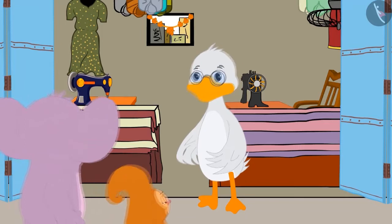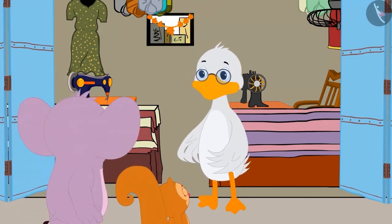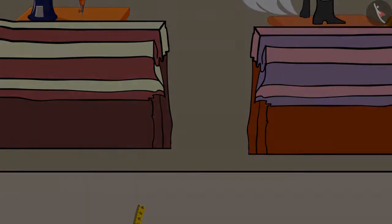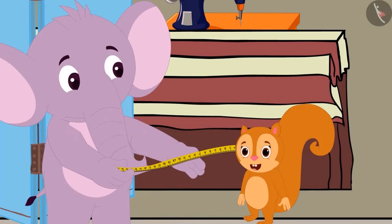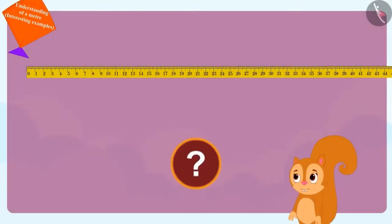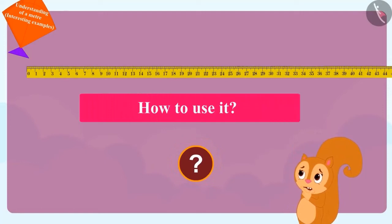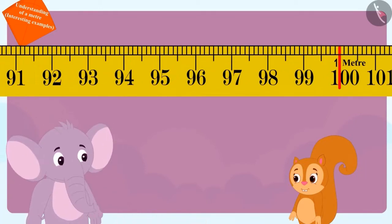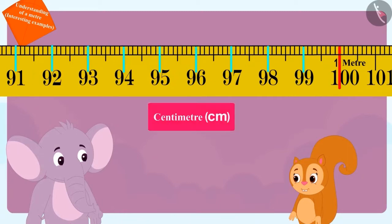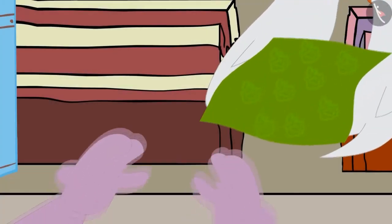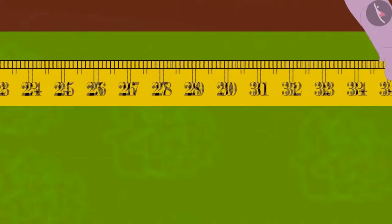Chanda and Appu have come to see the measuring tape at uncle's shop. Appu asked uncle for his measuring tape and showed it to Chanda, who got very excited after seeing it. She asked Appu how to use it. Appu told her to look at the measuring lines — the small vertical lines show the measurement in centimeters and the long vertical lines show the measurement in meters. Appu then took a material from uncle and measured it using the measuring tape.